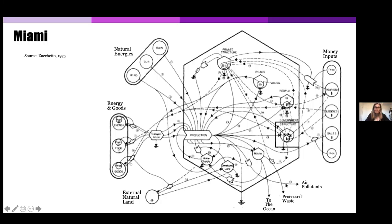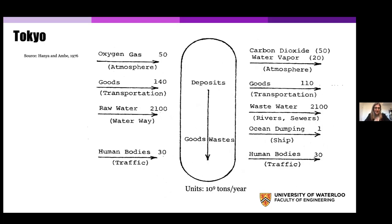In the center of the diagram are all the activities that take place in the specific case of Miami. And in Tokyo — a little more abstract, but generally the same concept — showing inputs of the atmosphere, transportation, water, and traffic, with outputs as well. What remains within the city, if it doesn't come out, is deposited — that is the accumulation of waste. Tokyo's diagram is also from the 1970s.